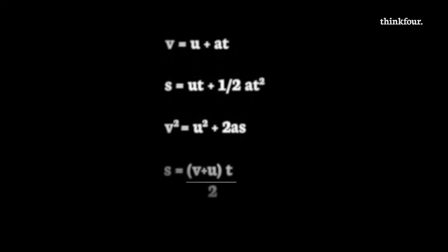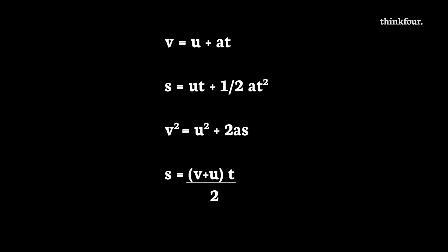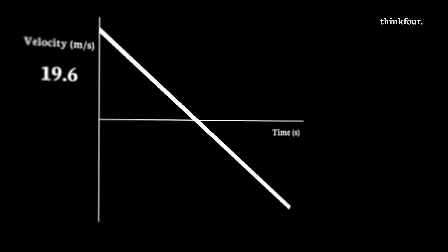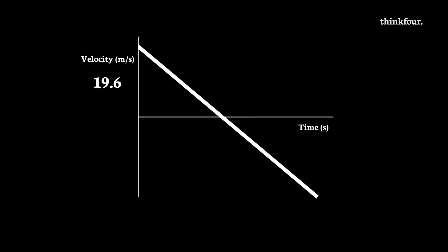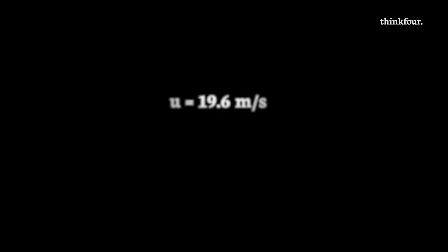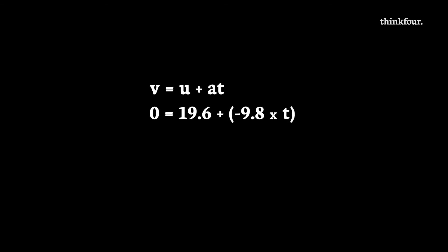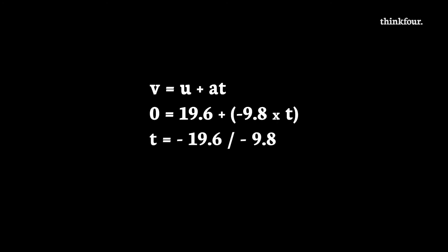Remember that acceleration will be 9.8 if we only look at the ball on the way up. V will be zero as it is about to change direction, or U will be zero if we only think about the second half of the motion, and you will be given values for at least one of S, T, U, or V. For example, if I put some numbers on my graph — initial speed 19.6 — I want to know how long it takes to reach its peak. I write initial speed U equals 19.6 meters per second, and final speed V equals zero as that is when the ball reaches its peak, and A equals negative 9.8 meters per second squared as it always does. Then I see that I have three out of four values for our equation V equals U plus AT. So I substitute in: zero equals 19.6 plus (negative 9.8 times T). Rearranging for T gives us 19.6 divided by 9.8, so T equals 2 seconds.